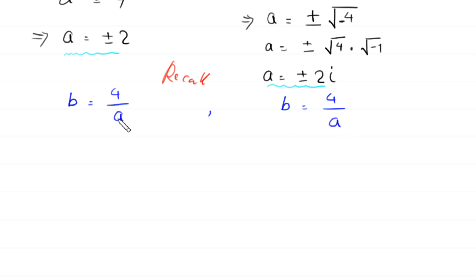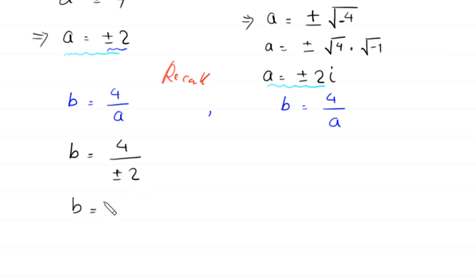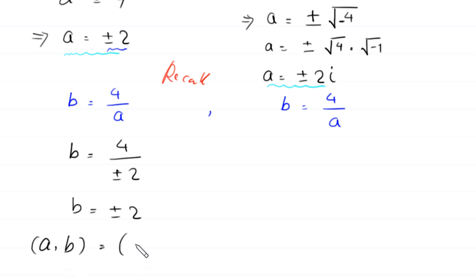Recall that b equals 4 over a. When a equals plus or minus 2, then b equals 4 divided by plus or minus 2, which gives b equals plus or minus 2. So we get the pair: a comma b equals plus or minus 2 comma plus or minus 2.